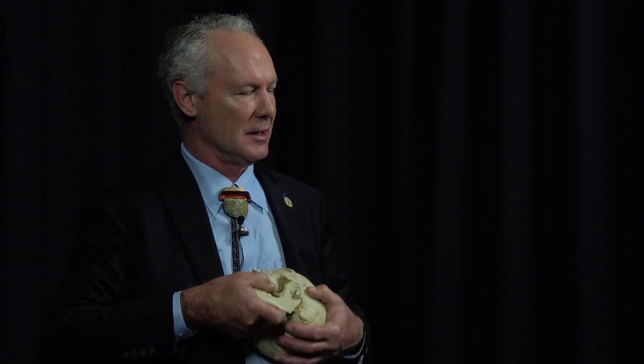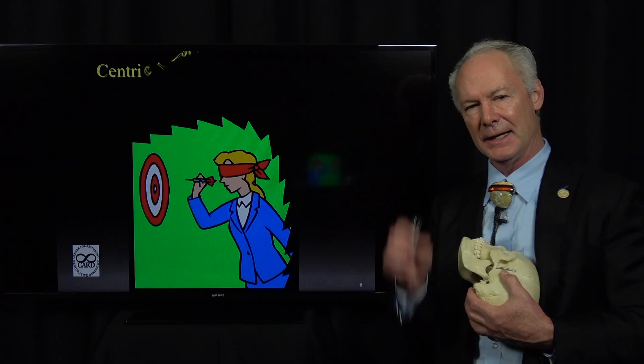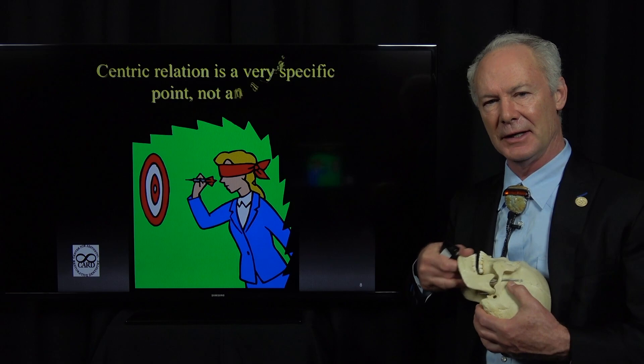All that means is centric relation only has to do with joint position in the fossa — in the socket. The easy way to think of it: it's when the condyle is maximally seated. It doesn't have anything to do with the biting of the teeth. It only has to do with the condyle, most stably seated in the fossa.